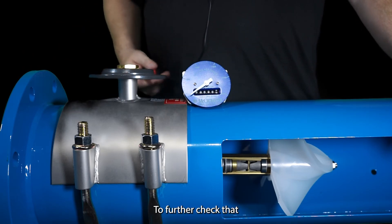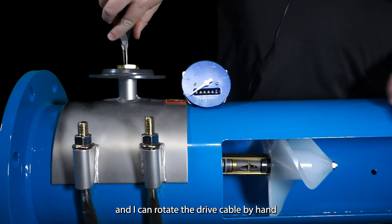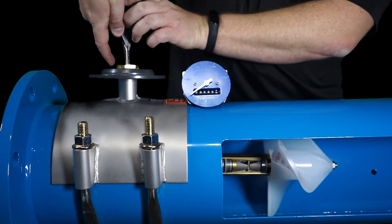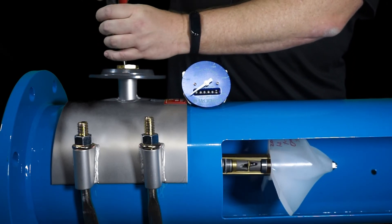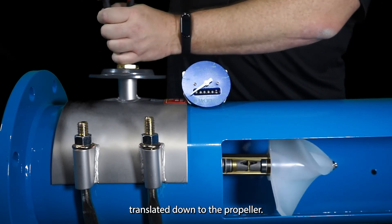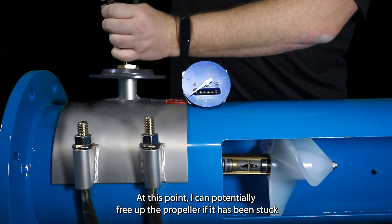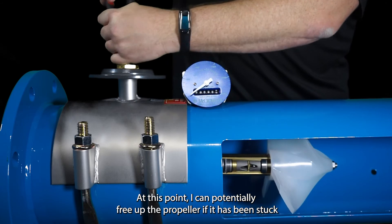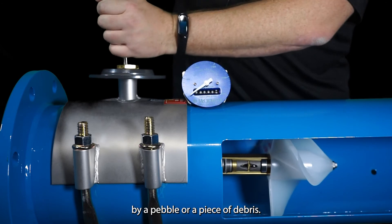To further check that I can take the drive cable and I can rotate the drive cable by hand and you'll see the motion translated down to the propeller. At this point I can potentially free up the propeller if it has been stuck by a pebble or a piece of debris.